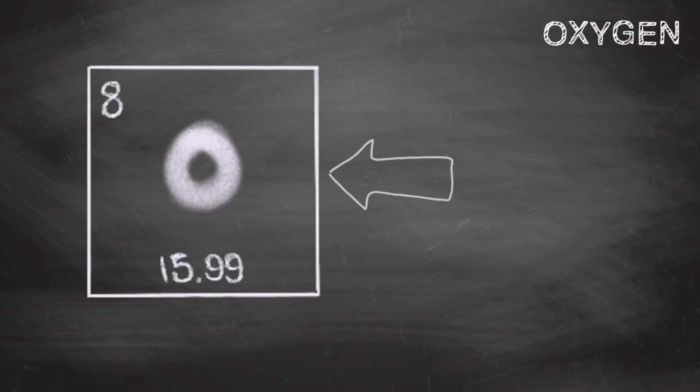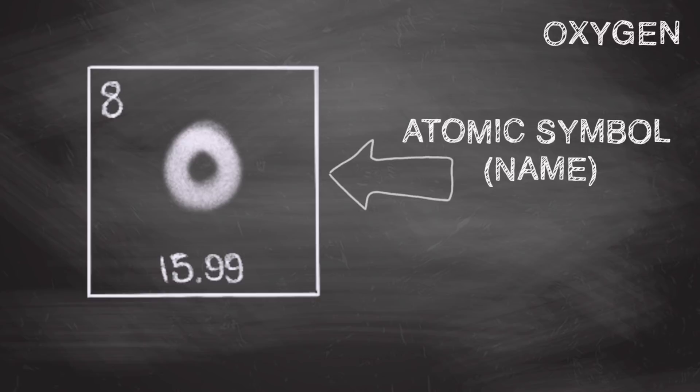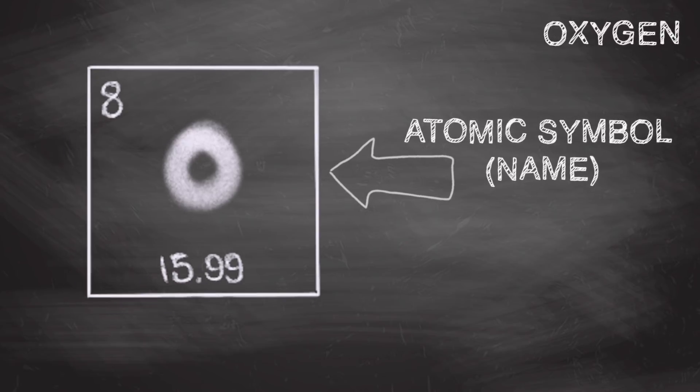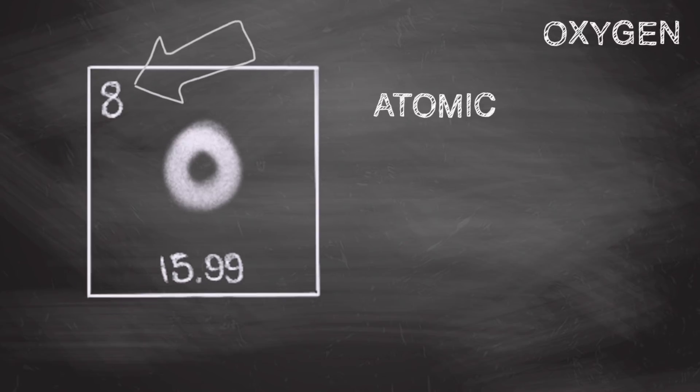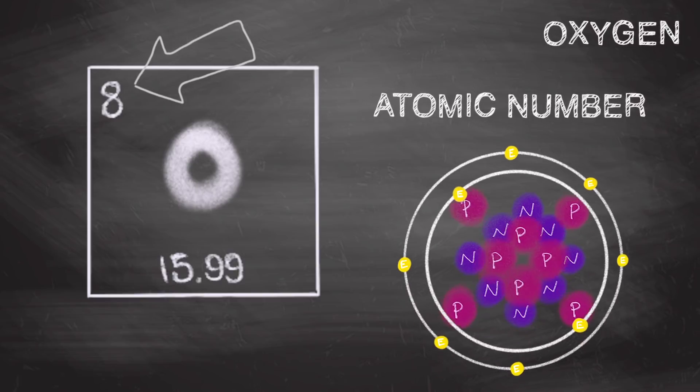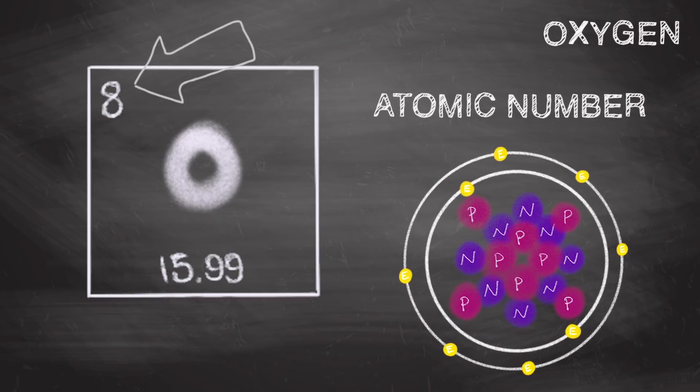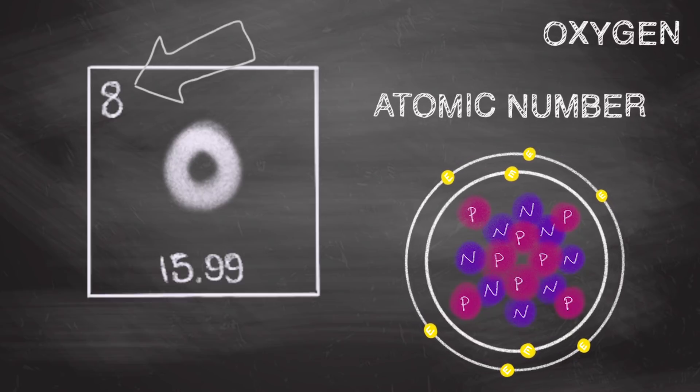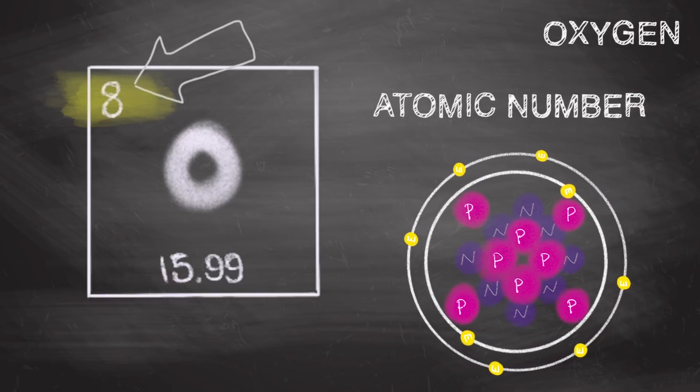The letters in the middle of the square are the atomic symbol, and they indicate the element's name, like this one for example, O for oxygen. The number at the top of the square is the atomic number, which is the number of protons in the nucleus. And this is what defines which element it is. Oxygen's atomic number is 8, meaning it has 8 protons.